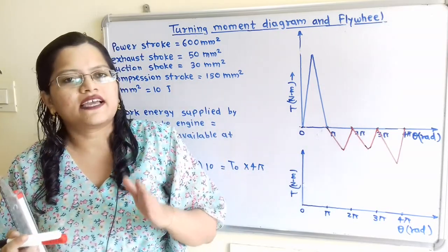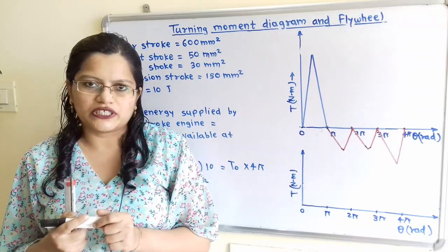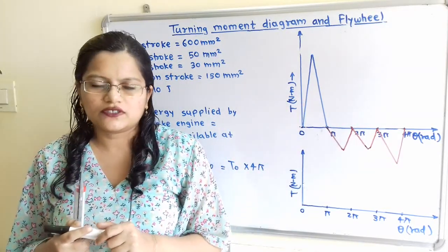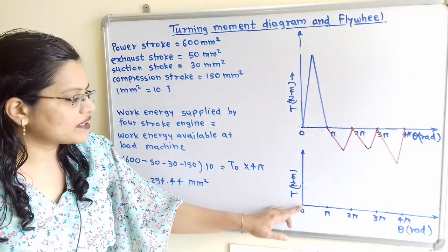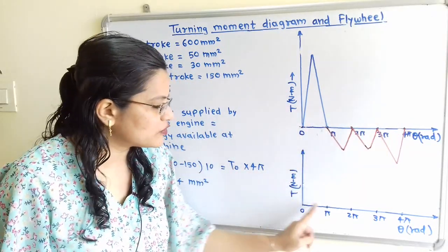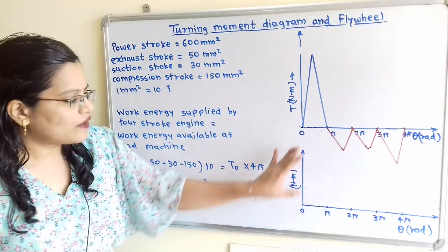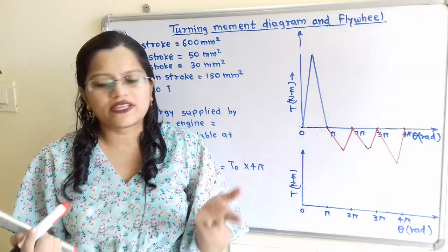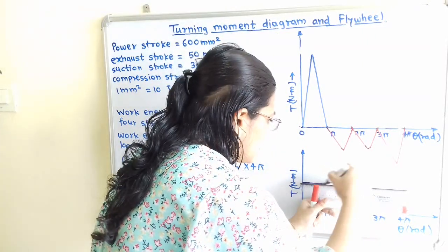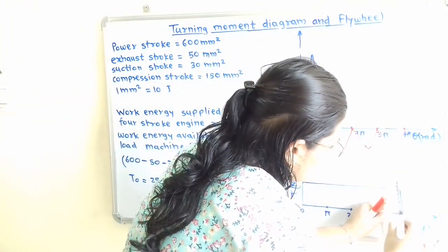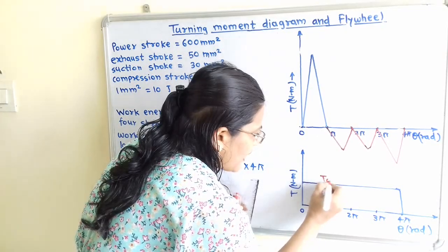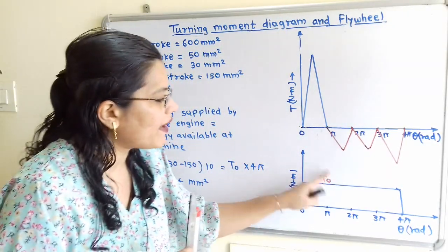The flywheel speed increases and then it supplies energy to the load machine. The driving torque is variable but the load torque is constant. To show the load torque, we use the same crank angle theta axis with the same scale: 0, π, 2π, 3π, and 4π. On the vertical axis we show torque, and since the load torque is constant, we draw a horizontal line. This constant load torque is denoted as T₀.